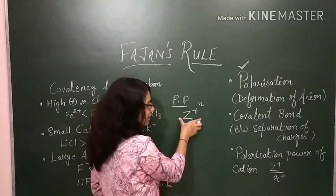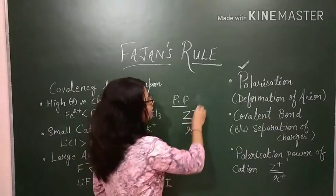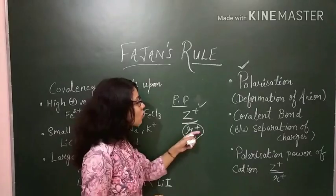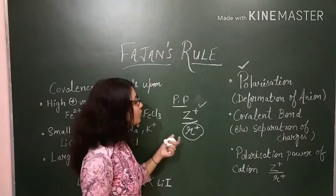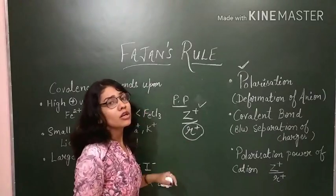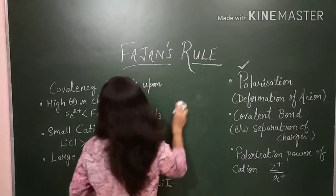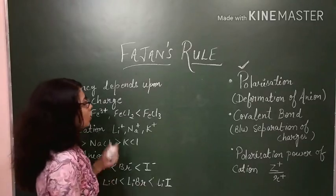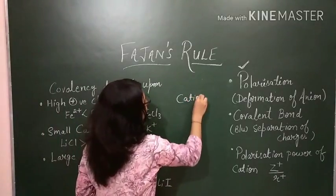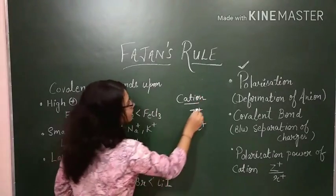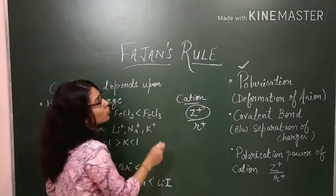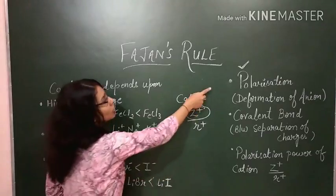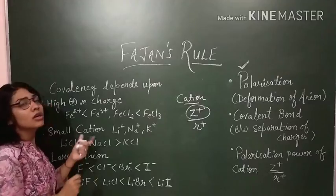Since charge is in the numerator, polarization power is directly proportional to it — more charge means more polarization power. Since radius is in the denominator, a smaller cation radius gives higher polarization power, and a larger radius gives lower polarization power. More polarization power leads to more polarization of the anion, and therefore more covalent character in the compound.